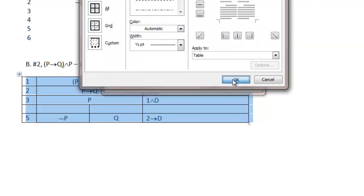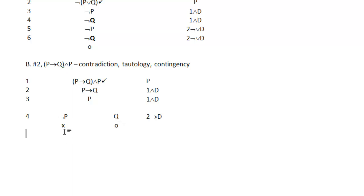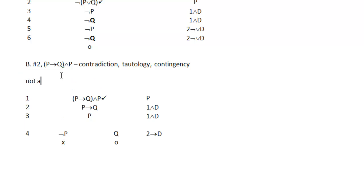Now we look from the base of the tree upward to see if the branches are closed. On the left-hand branch we have not P and P at line 3, so that branch closes. On the right-hand branch we have Q, but we don't have any proposition and its literal negation, so we conclude that branch is open. In a test for contradiction, if not all branches close, then we know it is not a contradiction.